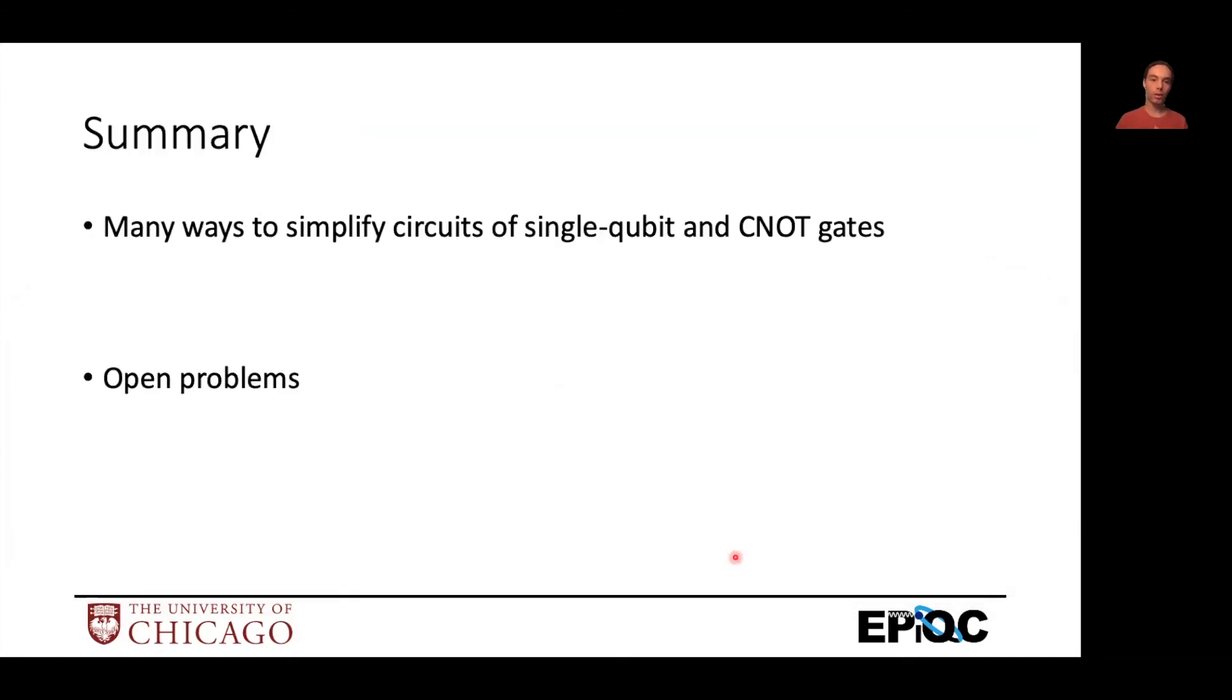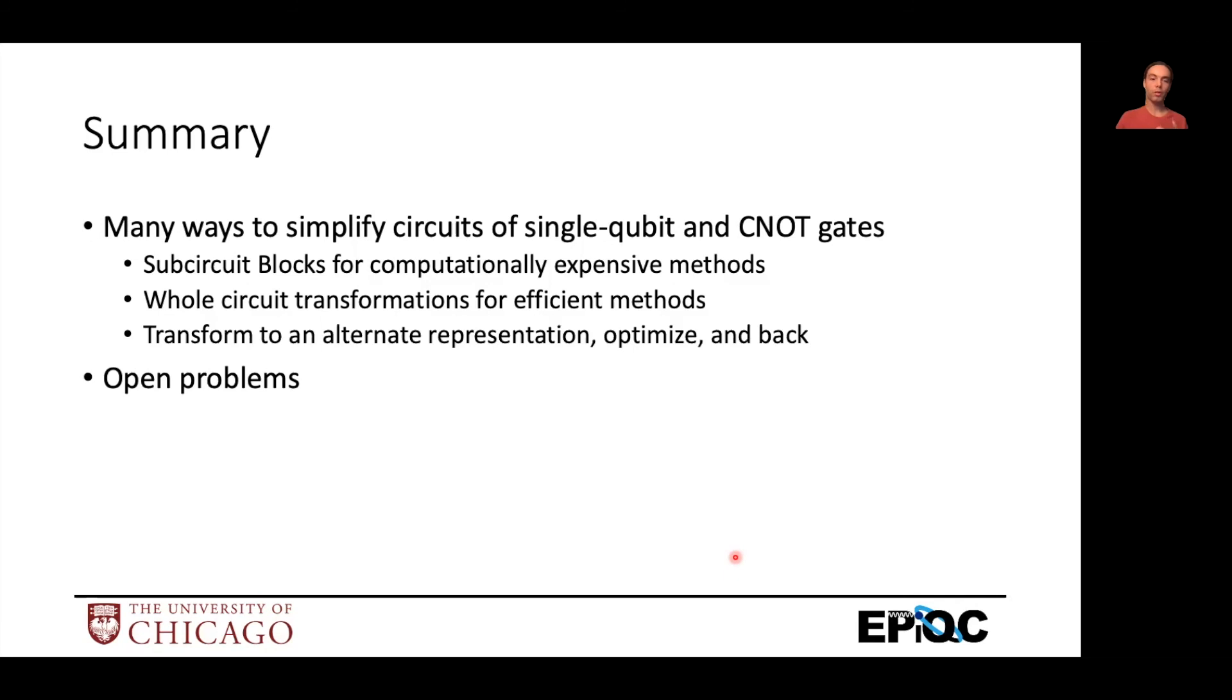In summary, we saw a bunch of ways to simplify circuits once you've decomposed them into single-qubit and CNOT gates. We took the sub-circuit blocks and used some computationally expensive methods to find fewer gates for those blocks. But we couldn't do larger blocks because that would take too long to compile potentially. We did some whole circuit transformations like gate commutation and pattern matching because they're a bit more efficient. And then with the ZX calculus, we transformed it to an alternate representation that can represent more than the circuit representation. That makes it easier to optimize because you aren't restricted to stay in the circuit representation as you manipulate the circuit. But then you have the challenge of bringing it back.